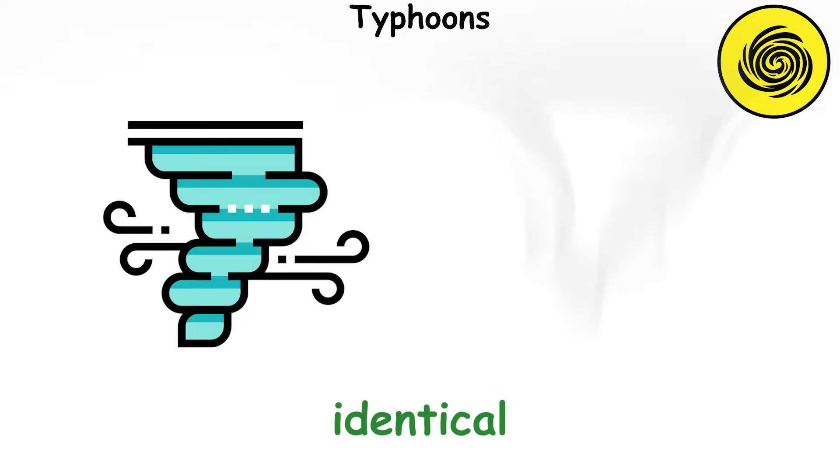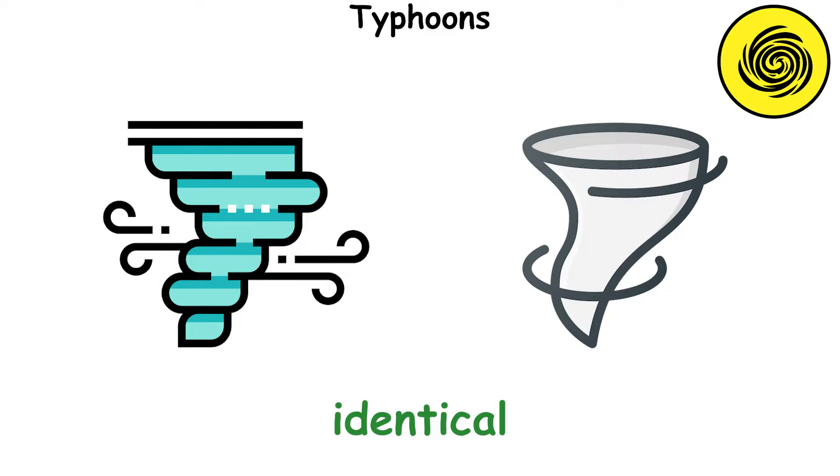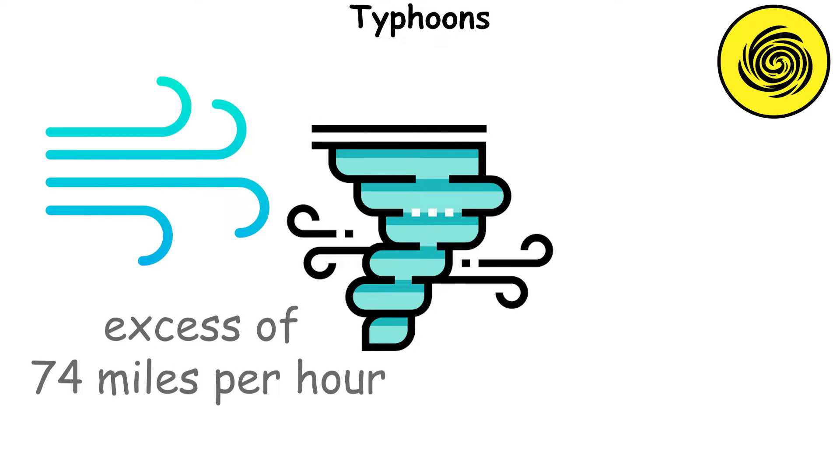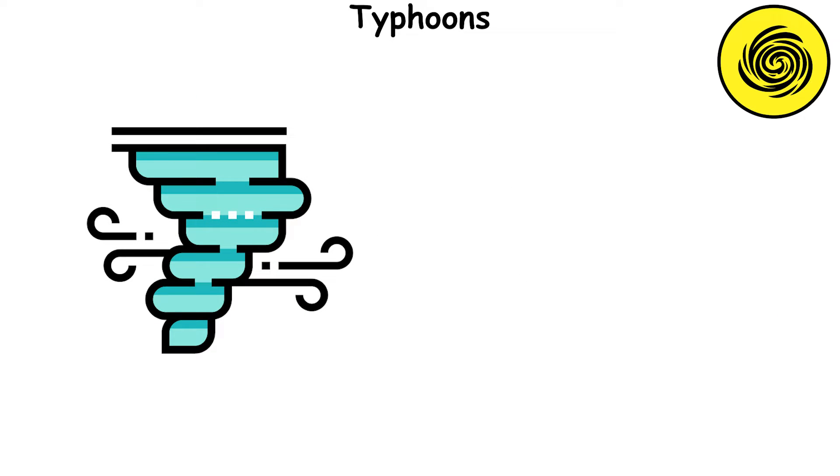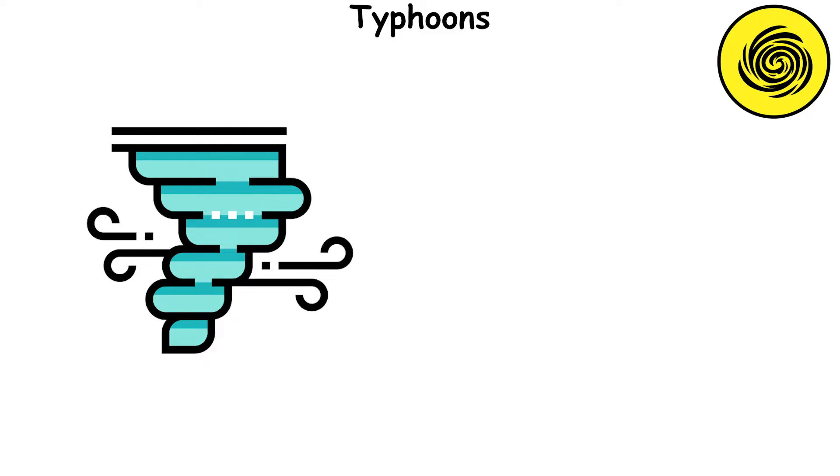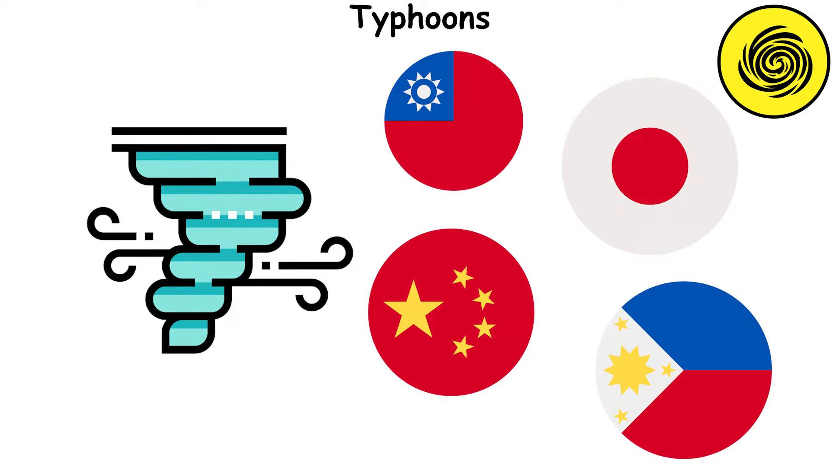Meteorologically speaking, typhoons are identical to hurricanes. The biggest difference is the location of their origin. Typhoon is the name given to tropical cyclones with sustained winds in excess of 74 miles per hour that form over the Northwest Pacific Ocean. Typhoons have the potential to be stronger than hurricanes because they form over warmer water, and they affect East Asian countries such as Taiwan, Japan, China and the Philippines.